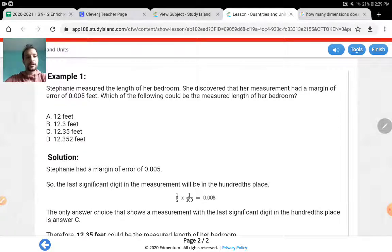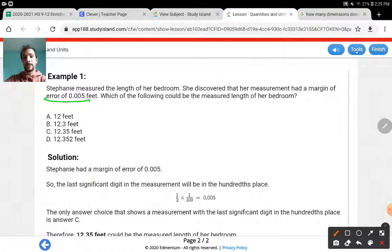The first example about significant digits that I have, I'll try to explain the concept behind it as well, by the way. Stephanie measured the length of her bedroom. She discovered that her measurement had a margin of error of 0.005 feet. Which of the following could be the measured length of her bedroom? If you have the margin of error, the first thing you need to do, again, if the margin of error is given, first thing is multiplying that number by 2. So 0.005 times 2 is going to give you 0.01.